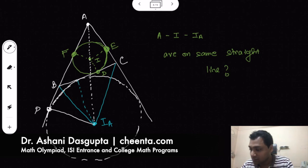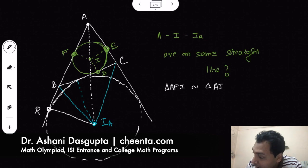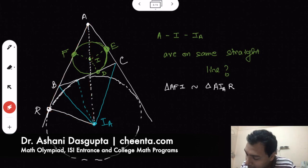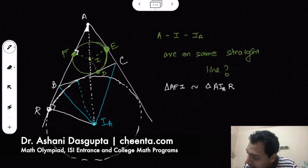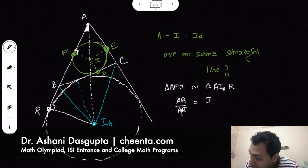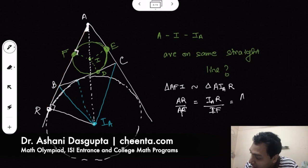Let's call the point of tangency of the excircle with the extended side R. Notice that triangle AFI is similar to triangle AIaR. This little triangle is similar to this big triangle. Why is that? Well, angle AFI is 90 degrees and angle AIaR is 90 degrees, and angle A is common — which is A/2 — so the triangles must be similar. This means that AR over AF equals IaR over IF, which equals AIa over AI.